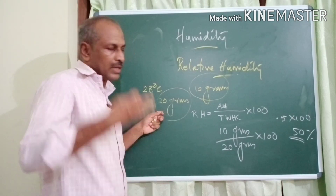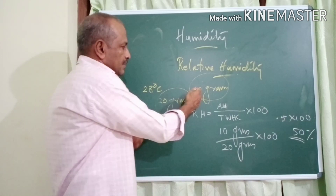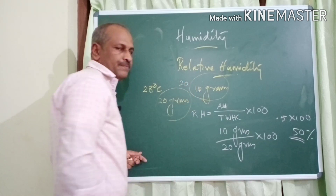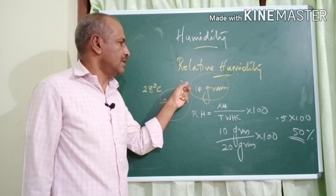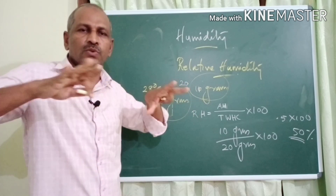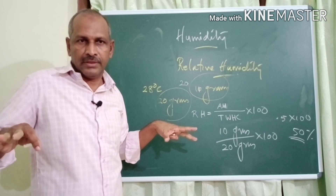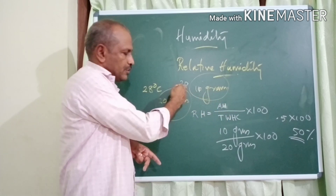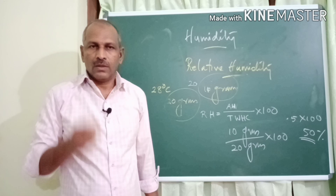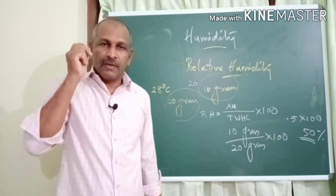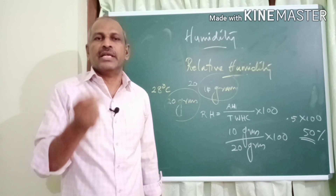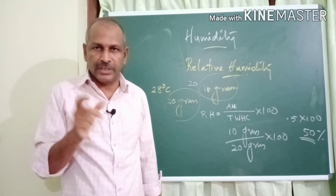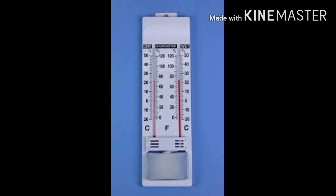If more and more water vapor reaches the atmosphere, the actual content increases from 10 to 11, 12, 13, 14, until it reaches 20. Now the capacity is 20 and the actual is also 20, meaning the atmosphere is fully saturated with water vapor. When the relative humidity is 100% — that is, 20 ÷ 20 × 100 = 100% — the atmosphere is fully saturated. Relative humidity can be measured using an instrument called the wet and dry bulb thermometer.